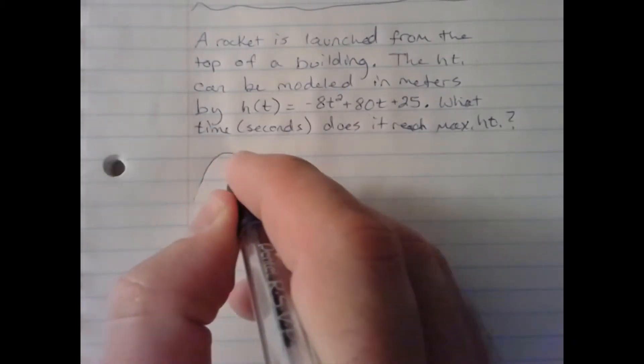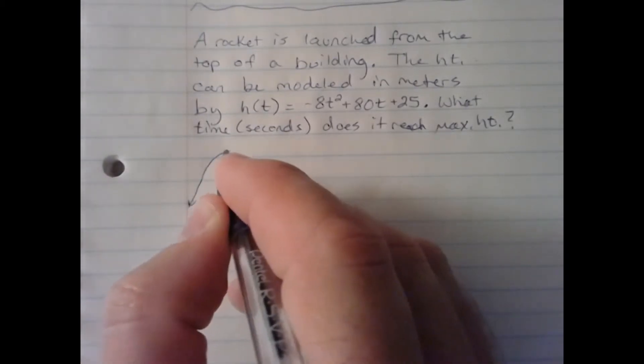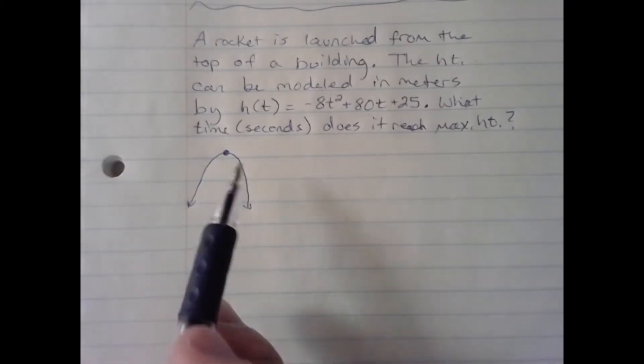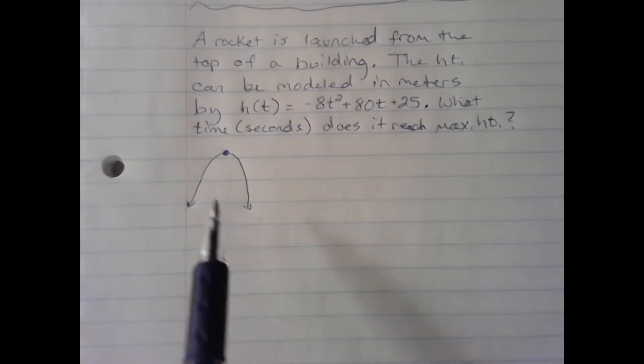By looking graphically at this, the maximum height would be the vertex of the parabola. So to answer the question, we just need to find the x-coordinate, or in this case t-coordinate for time, of the vertex.